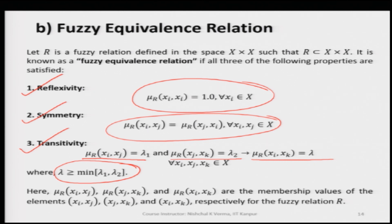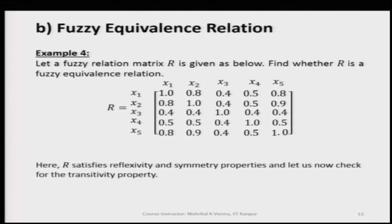If all three conditions are satisfied — the first condition reflexivity, the second condition symmetry, and the third condition transitivity — then for any fuzzy relation set we can say this fuzzy relation set is a fuzzy equivalence relation. Let us take an example to understand this concept better.